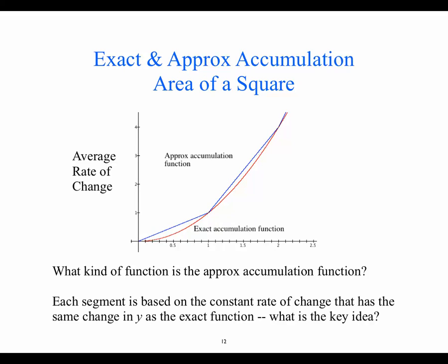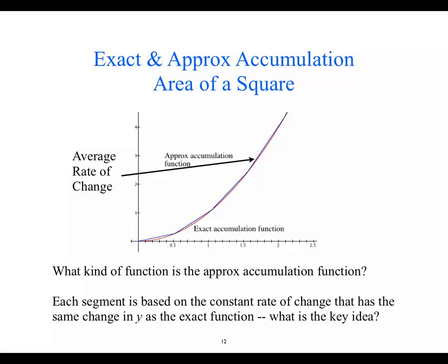This one is for a delta x of 1. Here's delta x of 0.5. What do you notice about these average rates compared to the last ones? They're doing a better job hugging the curve — these are constant rates doing a better job reproducing the exact accumulation function.